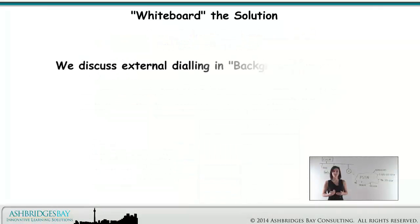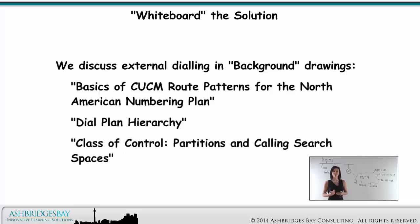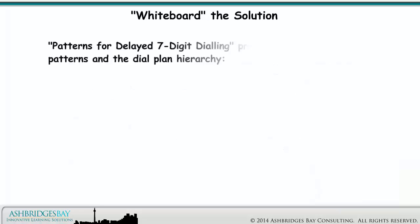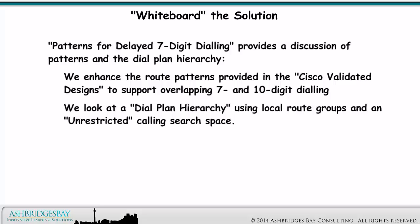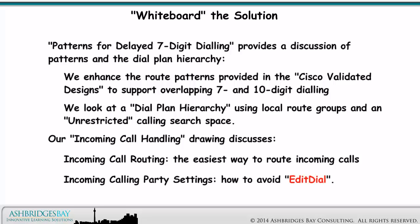We discuss external dialing in background drawings: Basics of CUCM route patterns for the North American Numbering Plan; Dial plan hierarchy; Class of control, partitions and calling search spaces; Patterns for delayed 7-digit dialing — provides a discussion of patterns and the dial plan hierarchy; and we enhance the route patterns provided in the Cisco validated designs to support overlapping 7 and 10-digit dialing. We look at a dial plan hierarchy using local route groups and an unrestricted calling search space. Our incoming call handling drawing discusses incoming call routing and incoming calling party settings — how to avoid edit dial.